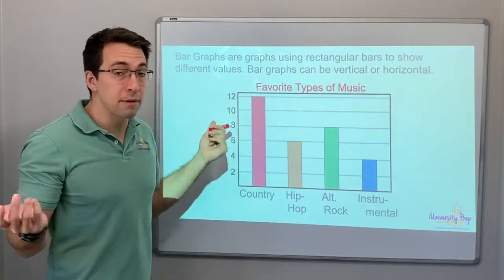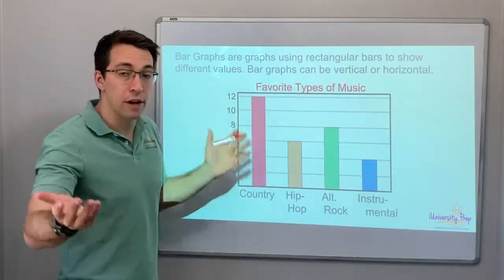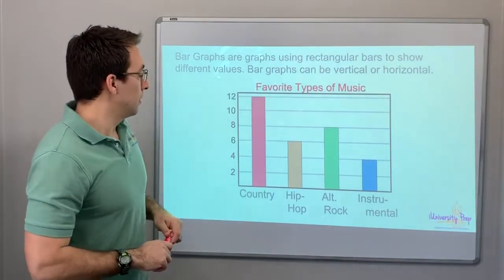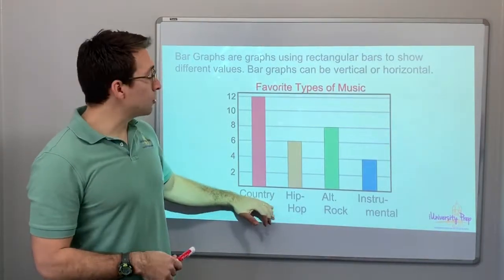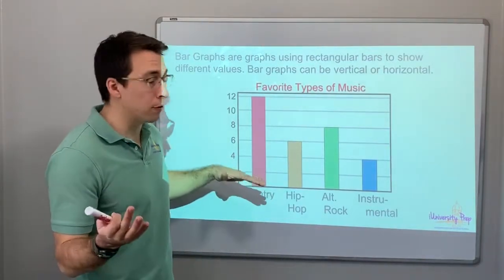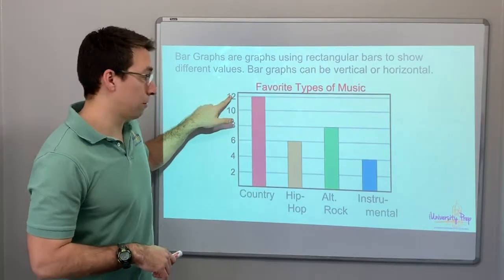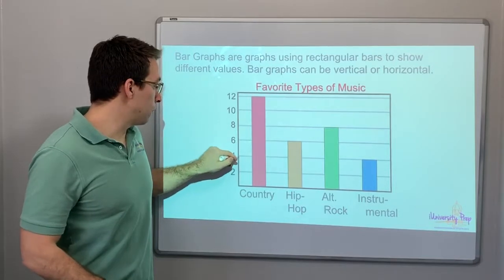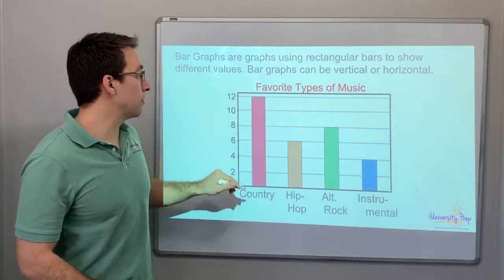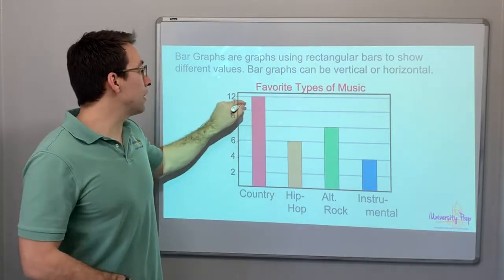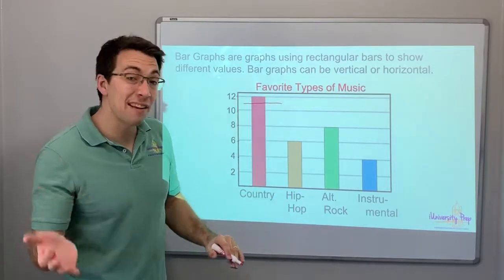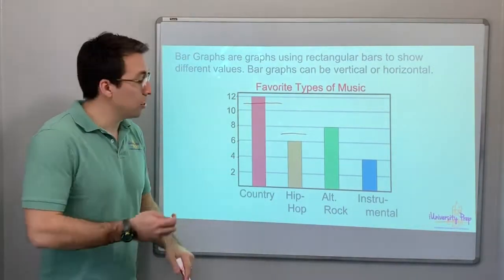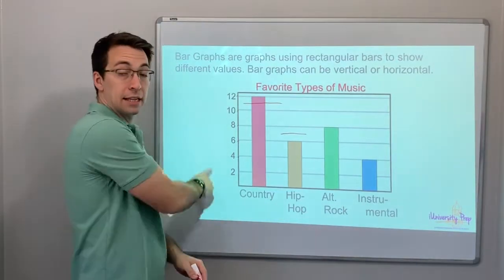This bar graph shows favorite types of music. Maybe all the fifth graders in GCISD were surveyed. Country was the most popular — how many people voted for country music? 12. Something I want to show you with bar graphs: 2, 4, 6, 8, 10, 12. The bar could have stopped here and been 11, or here and been 7.